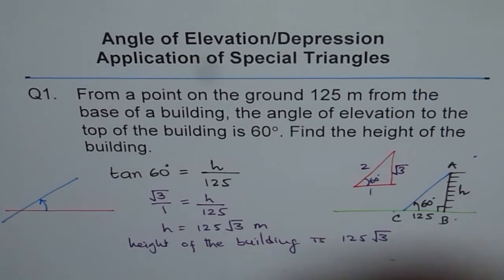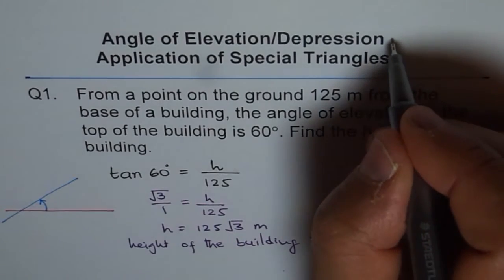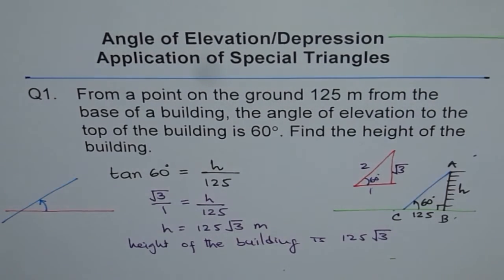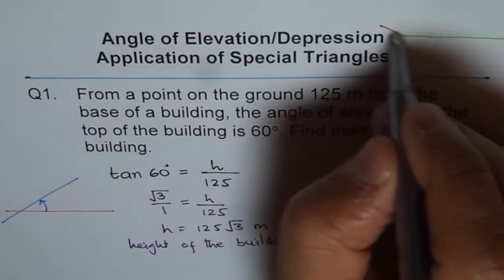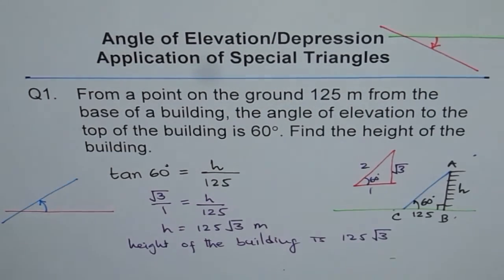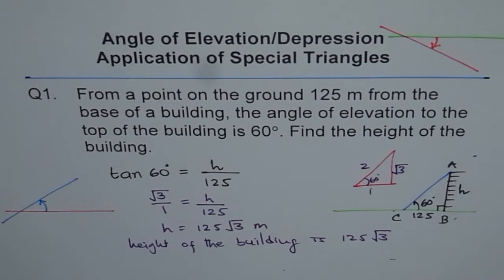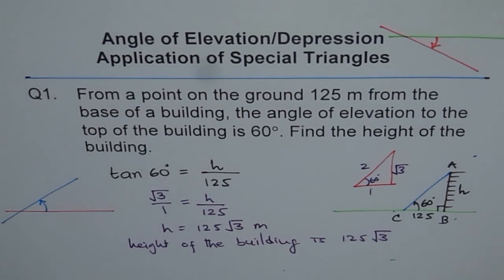The angle of depression is when you are looking downwards — the horizontal is your reference and the angle made looking downward is the angle of depression. We will take questions on both elevation and depression, and by the end of these five or six videos you should understand both concepts along with the application of special triangles.